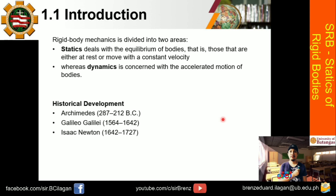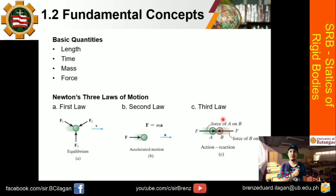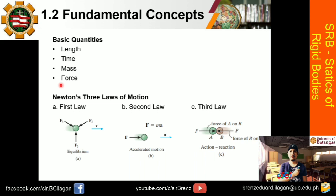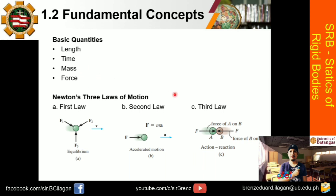So ang ating discussion is mabilis lang, parang discussion lang nung ating chapter. So again, nasa inyo naman yung module, basahin nyo na lang yung kabuuan since ito is parang summary lang nung chapter na yun. Okay, what are the basic quantities? So meron tayong apat: we have the length, time, mass, and force. So dun sa module na binigay, meron tayong binigay na mga common unit when it comes to length, time, mass, and force. So pakitandaan na lang itong mga basic quantities na gagamitin natin for the statics of rigid bodies.